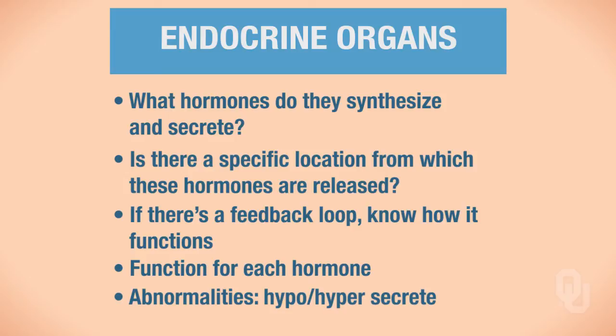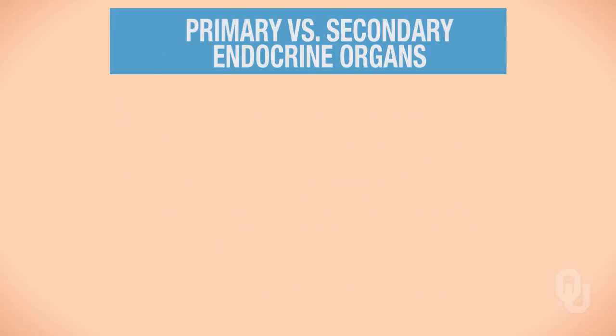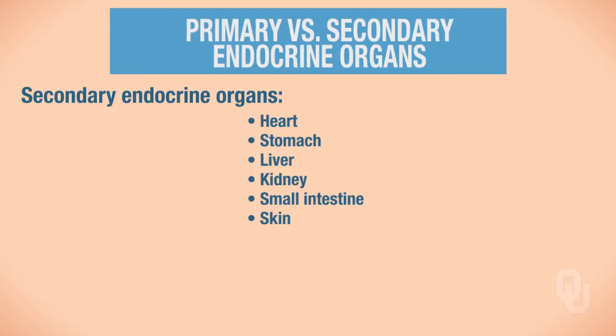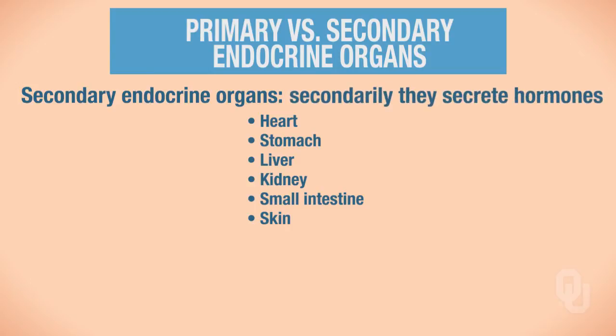To begin, we're going to take a moment to describe primary versus secondary endocrine organs. These segments on the endocrine system will focus on the primary endocrine organs. Primary endocrine organs have a major function of synthesizing and secreting hormones. Secondary endocrine organs have other primary functions, but secondarily they do produce or synthesize and secrete hormones. In these segments, we are going to focus on the primary endocrine organs.